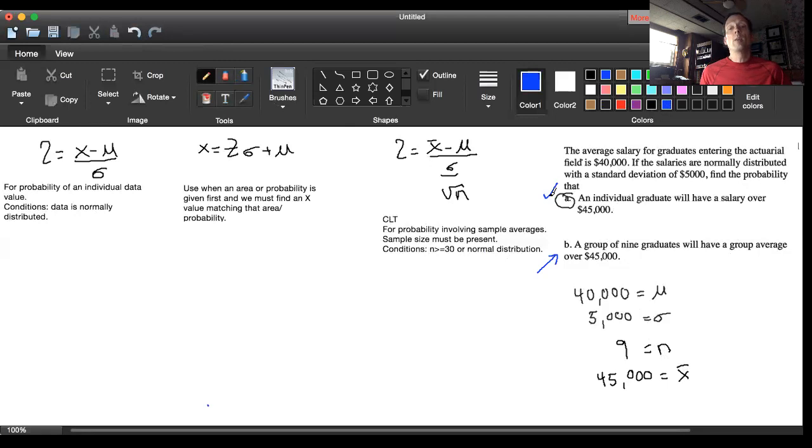Since they're now asking for the probability that a group can average over $45,000, the chance that X bar is greater than $45,000, there's only one formula that works for the probability of a sample average—that's the one on the far right, our central limit theorem. Let's set up the curve sketch.